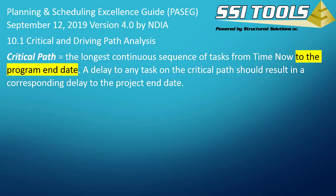Critical path is defined as the longest continuous sequence of tasks from time now to the program end date. Program end date is the key here. If you delay any task on the critical path, you also delay the project's end date.